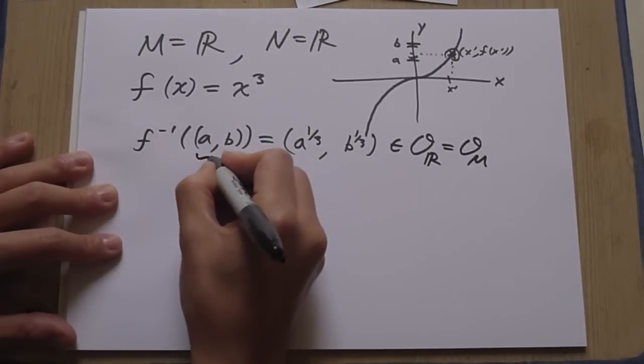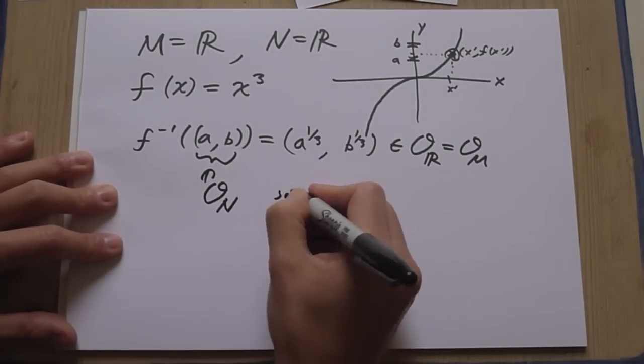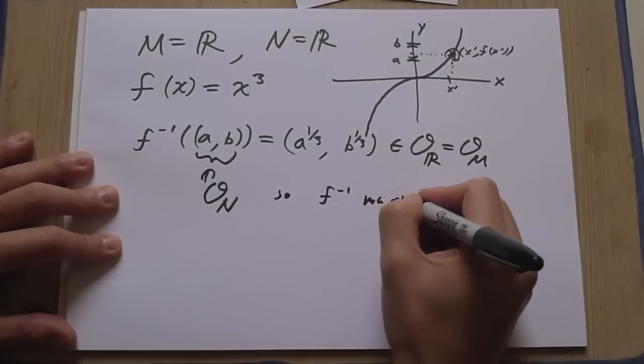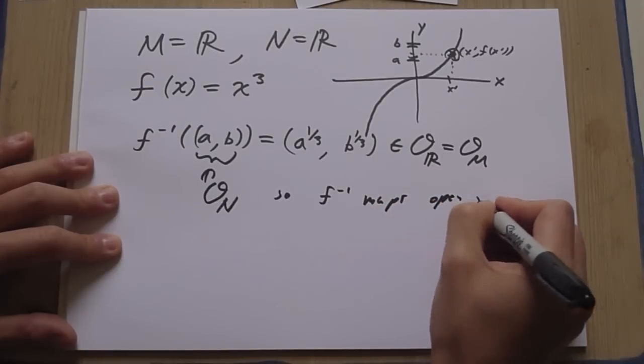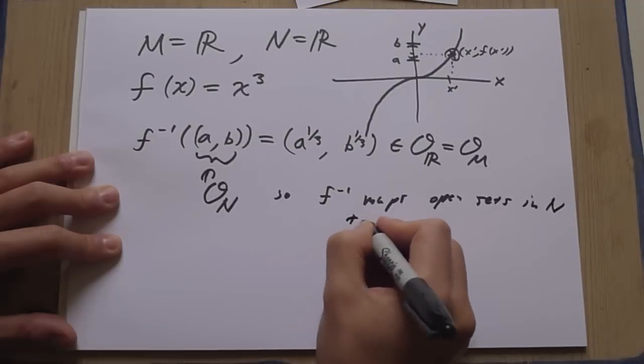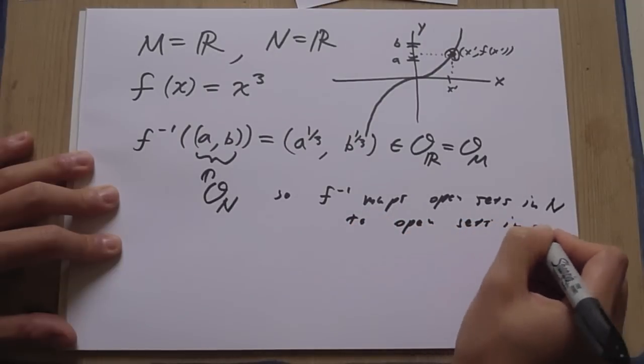Okay, the point is that this is another open interval, therefore it's an open set in the reals. And this guy here, this is an open set on the reals, so this is also in open sets on N. So F inverse maps open sets in N to open sets in M.